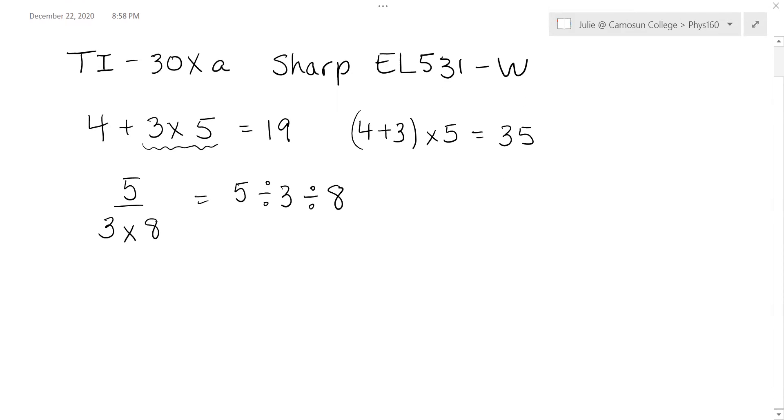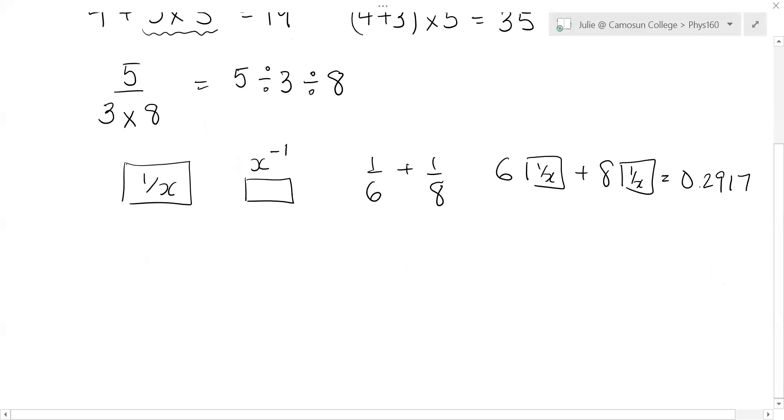Another cool feature on your calculator you probably don't use is the one over x key, or sometimes it's above a button as a second function and it looks like x to the minus one. It's when you want to take the reciprocal of a number. So if you wanted to do the operation one sixth plus one eighth, you don't have to go one divided by six plus one divided by eight, you can just go six and then flip it over plus eight and flip it over equals and you should get 0.2917. That's a very handy thing on your calculator you should use.